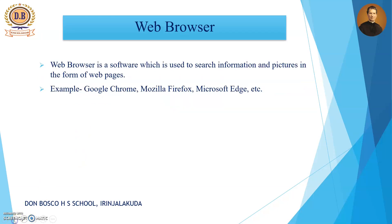Now let us move to the next software, that is the web browser. In the fifth chapter we studied web browsers like Google Chrome, Mozilla Firefox, and Microsoft Edge — these are examples of web browsers. A web browser is also a software. What is its use? It is used to search for information — you can search any information and also pictures.